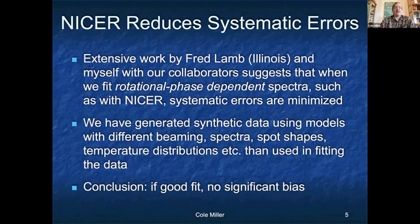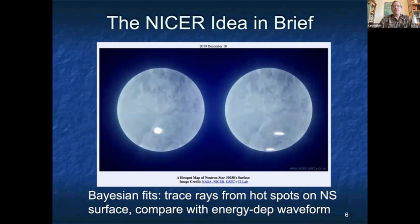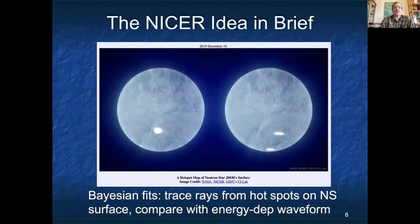Obviously there are many ways to have systematic bias, but this is what has led to our cautious optimism that NICER results are not just precise but also reliable, which is rather important. As Slavko described, the NICER idea is that we imagine a star with hotter regions — hot spots — that rotate with the star and emit in soft X-rays. For a given mass, radius, rotation rate, spot configuration, temperature, et cetera, we predict what we would see in the X-ray data. Being good Bayesians, we compute the likelihood of the data given the model and do extensive sampling to figure out the most probable regions for each parameter.